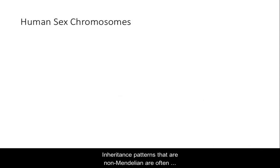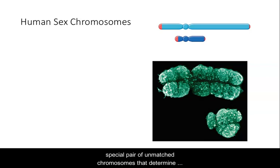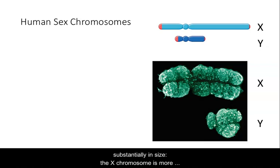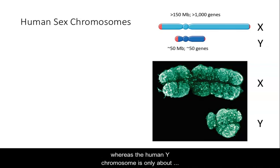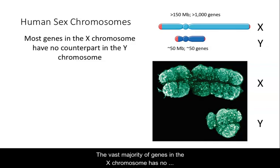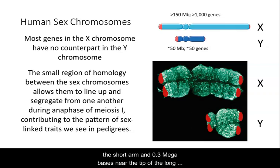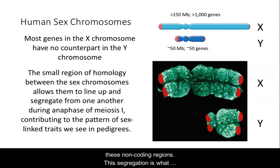In many animal species, the sex chromosomes are a special pair of unmatched chromosomes that determine the sex of an individual. In humans, they are called the X chromosome and the Y chromosome, and they differ substantially in size. The X chromosome is more than 150 megabases long with over a thousand genes, whereas the Y chromosome is only about 50 megabases and consists of about 50 genes. The vast majority of genes on the X chromosome have no counterpart on the Y chromosome. These sex chromosomes have sequence homology of only 2.7 megabases at the tip of the short arm and 0.3 megabases near the tip of the long arm, allowing them to line up during meiosis with only very limited crossing over in these non-coding regions.